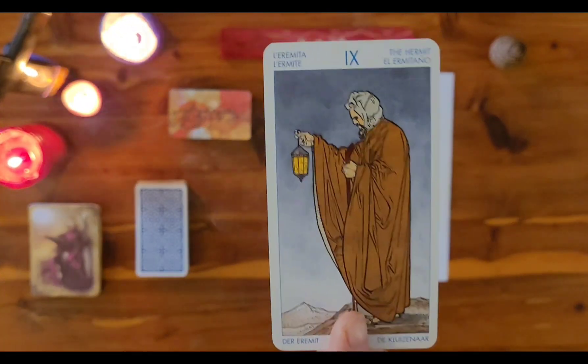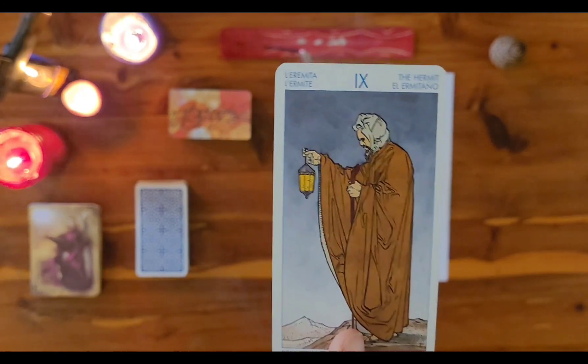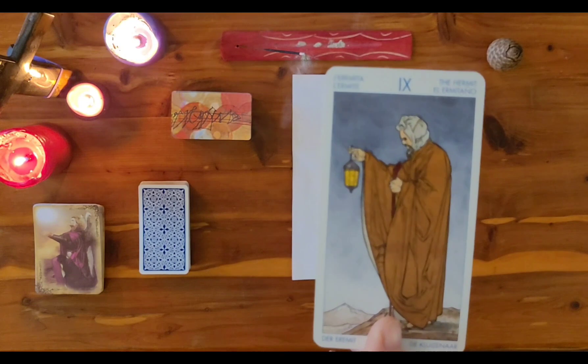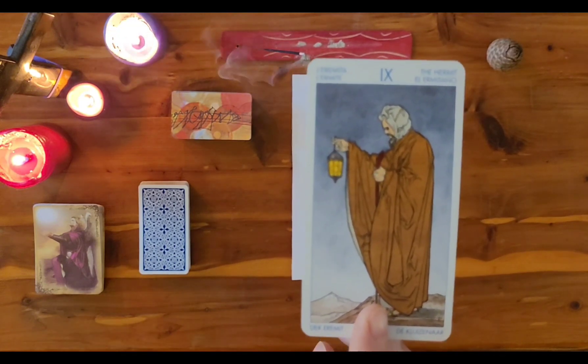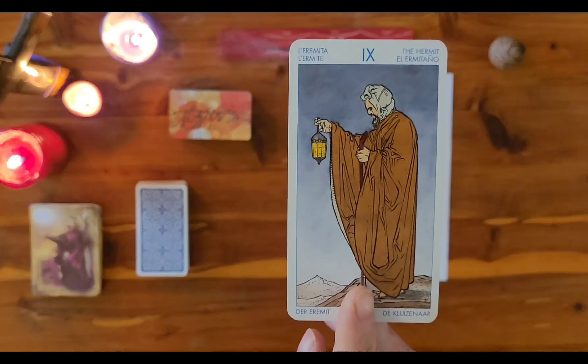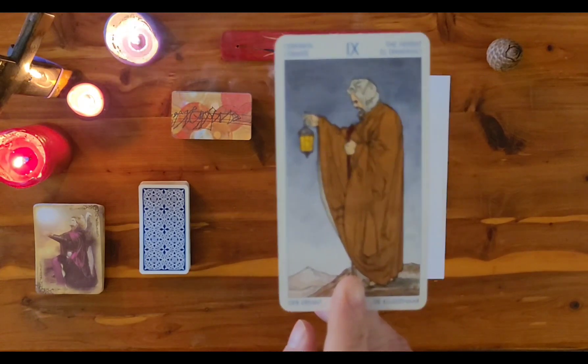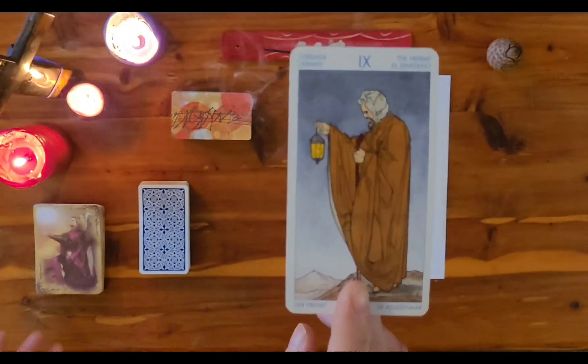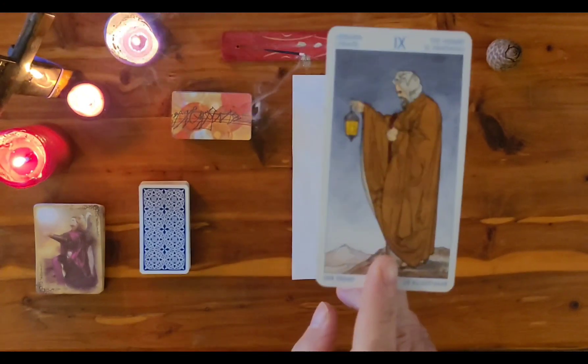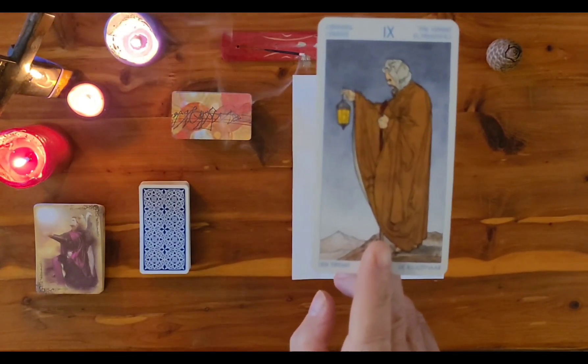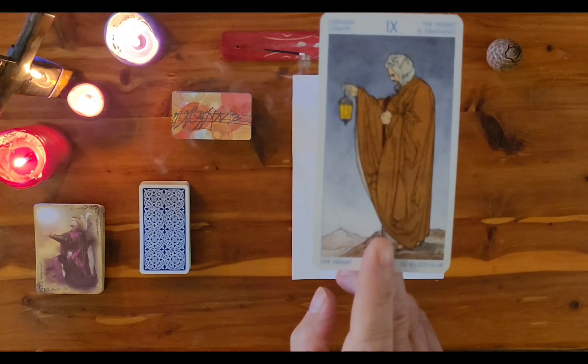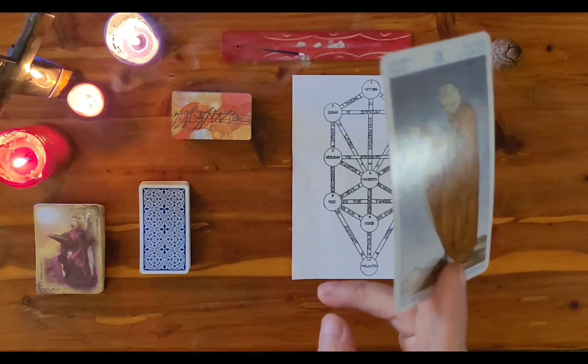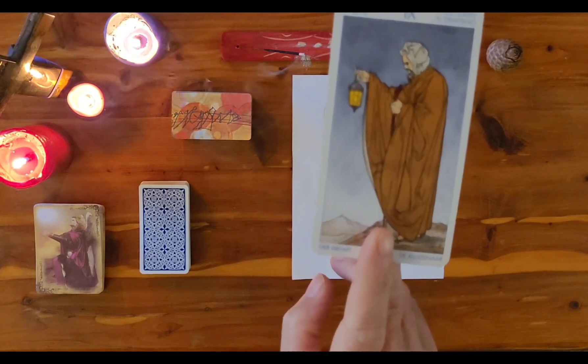Now, the Hermit indicates self-imposed solitude, maybe in the quest of higher wisdom or higher knowledge or self-reflection. It's these periods in life where we embrace this self-solitude that we do a lot of growing, a lot of spiritual growing, a lot of mature development. And this is a beautiful card. I would embrace this Hermit moment.